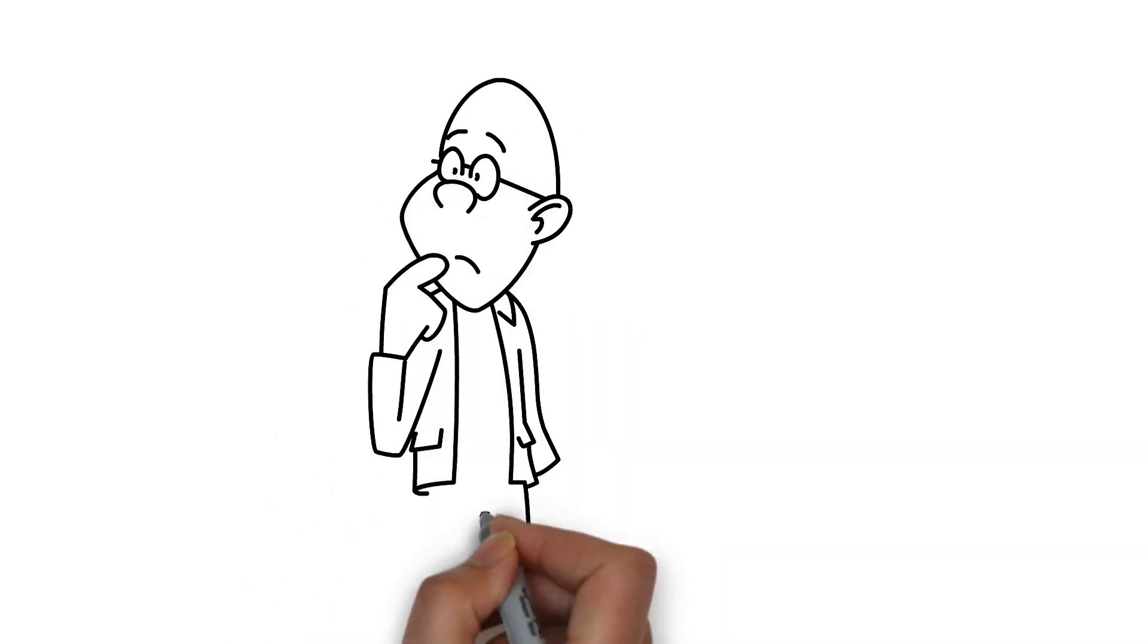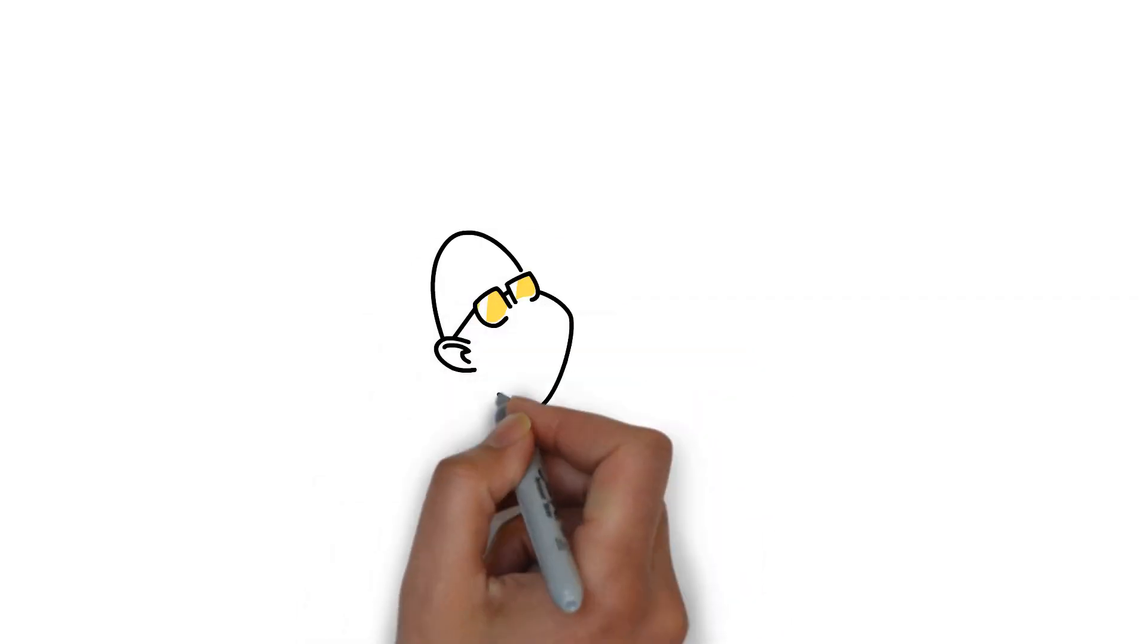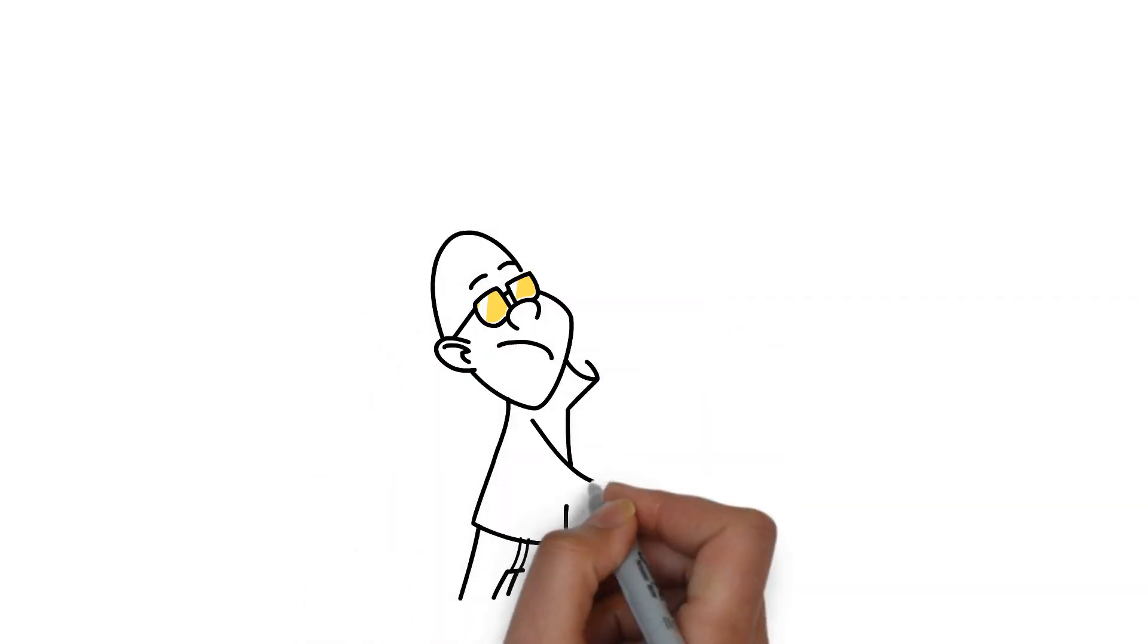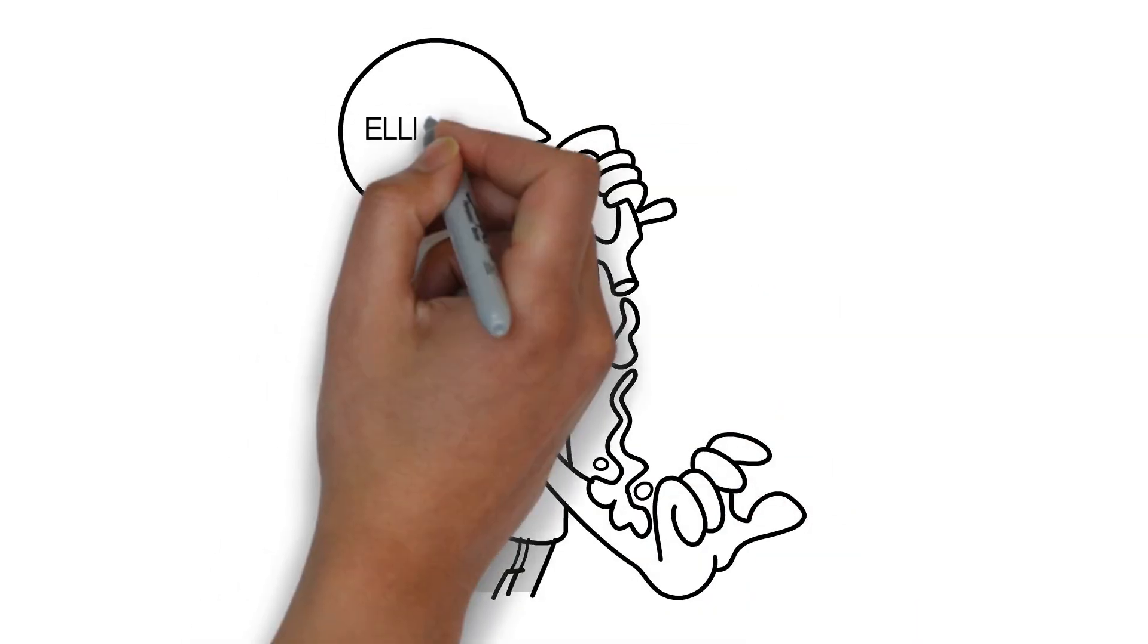How can Philippe reset his circadian rhythm? Yellow sunglasses act as blue light filter and help recover from his jet lag. As anti-stress program against epidermal jet lag, Philippe uses Celigent.